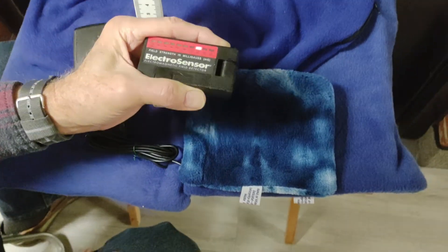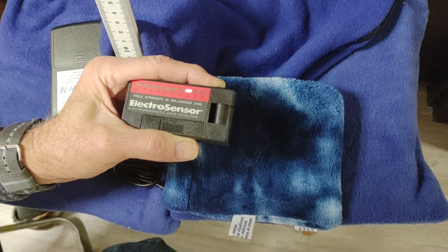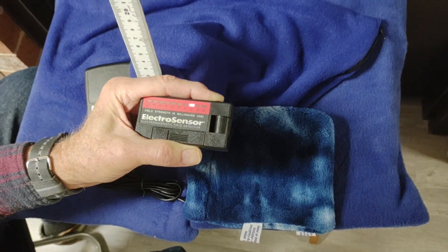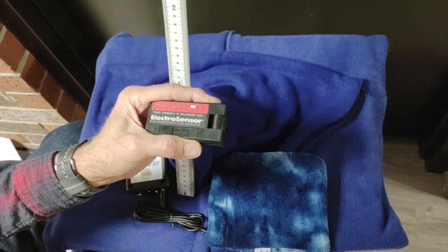Now if I move over to the pulse pad itself, we're still measuring the same kind of intensity. At 10 centimeters, we're measuring about 20 to 30 milligauss. At 20 centimeters, we're also measuring about the same.